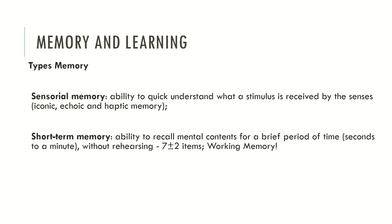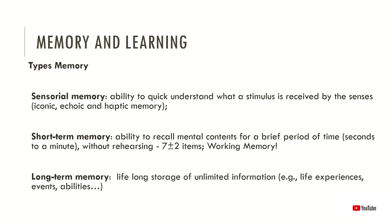Broadbent found that our short-term memory typically has seven plus or minus two items. Sometimes some authors describe short-term memory as working memory, and working memory may be viewed as an executive function. Long-term memory is described as the lifelong storage of unlimited information, typically regarding life experiences, events, abilities and so forth.